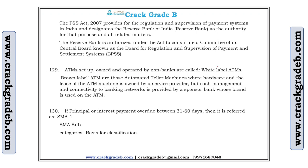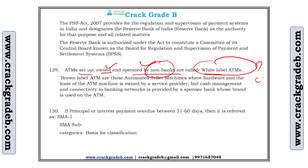Regarding ATM setup: White-label ATMs are those owned and operated by non-banks. For example, Hitachi ATMs found at some railway stations, or ATMs operated by the Tata group — these are known as white-label ATMs. Brown-label ATMs are those where the hardware and the base of the ATM machine is owned by a service provider, but cash management and connectivity to the banking network is provided by a sponsor bank whose brand name is used on the ATM.